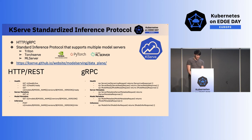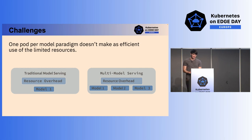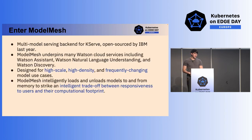The main model servers supported include Triton Server, PyTorch TorchServe, and ML Server, with standardized REST or gRPC endpoints. However, KServe is not necessarily well-suited for edge. There is resource overhead because sidecars might be injected into each pod, and having an independent model server per model — a model per pod — results in a lot of resource consumption. It doesn't make the best use of already resource-constrained edge devices. We need a way to serve multiple models in a singular pod or container.